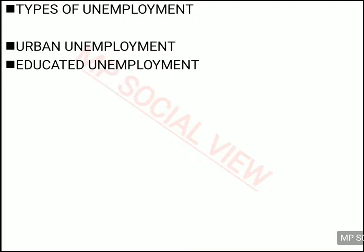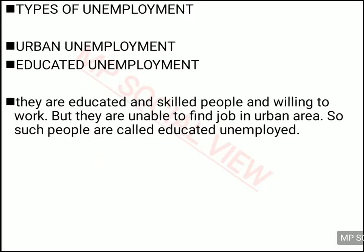The third type, found in the urban area, is educated unemployment. This is a kind of unemployment in which an educated and skilled person — who has qualifications and skills — is still unable to find a job. They are ready to work at the wage decided by the market, but still cannot find employment. It mostly happens in the urban area where educated people are not able to find jobs. This is called educated unemployment.